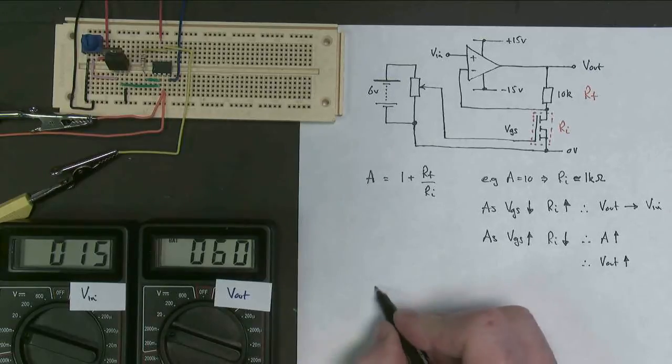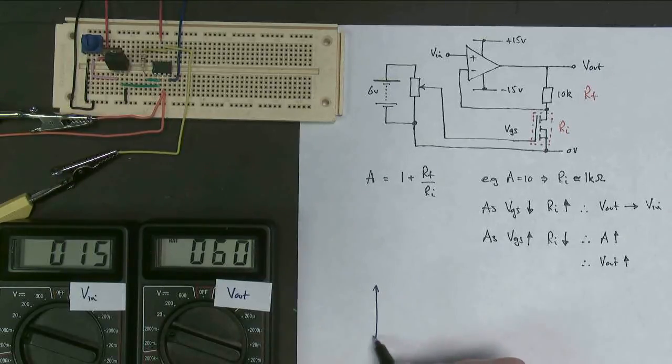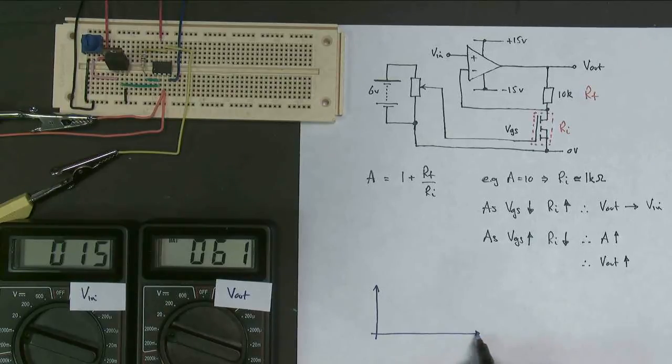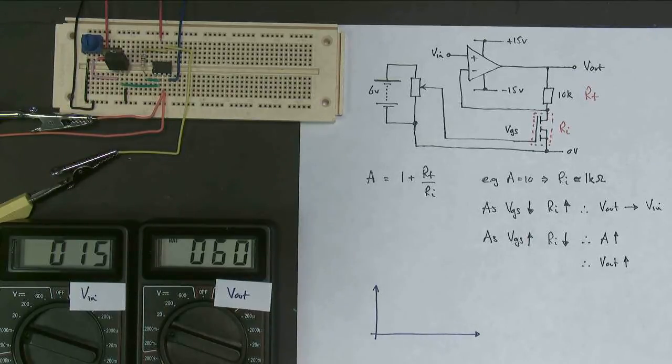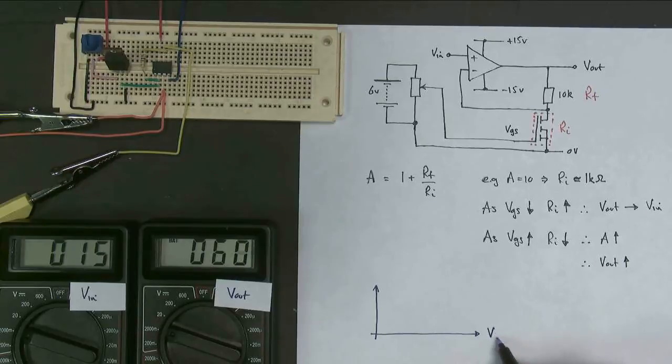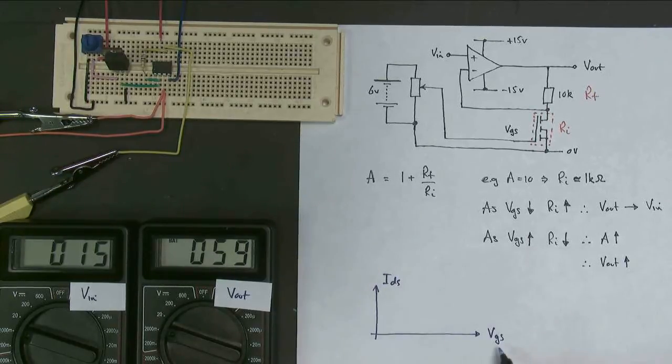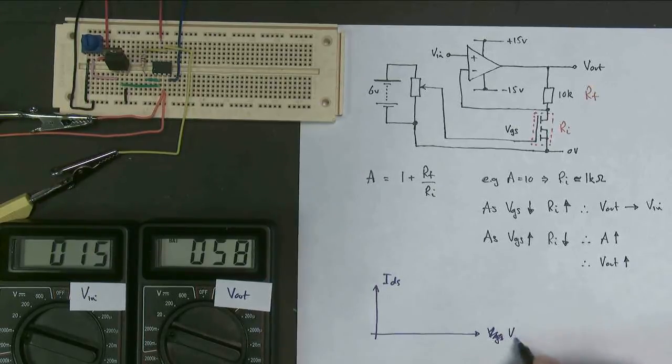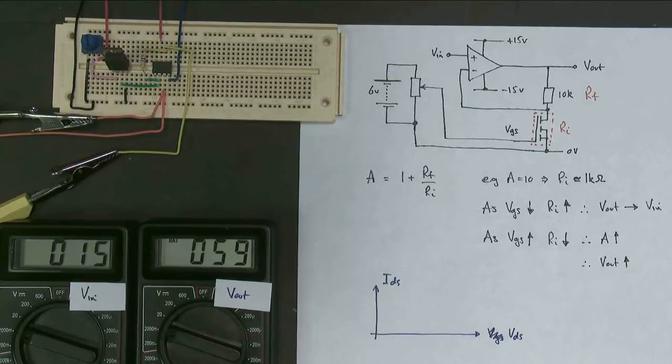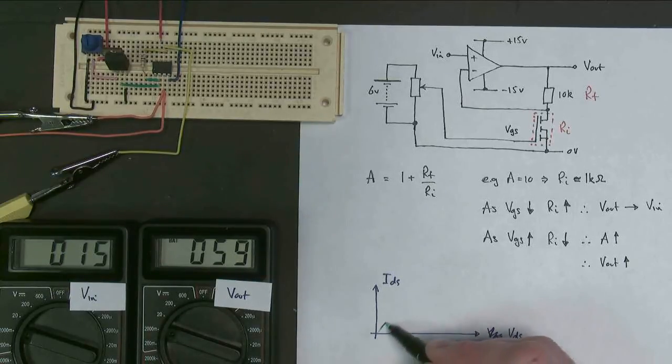So if we remember our graph that we had, we had VGS. You have to watch out with these graphs, what you're actually plotting. It's either VDS or VGS. VGS in this case. Or is it? No, it's not. See, I made that mistake myself. VDS.